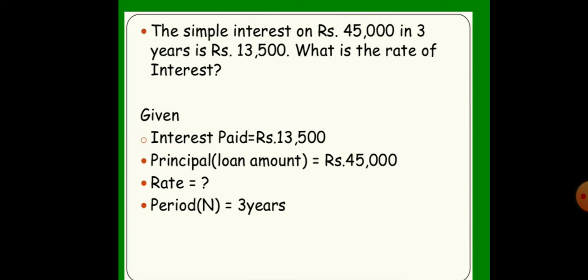Based on the example: The simple interest on Rs. 45,000 in 3 years is Rs. 13,500. What is the rate of interest? Based on the question, you have to calculate the rate of interest. Given: Interest paid = Rs. 13,500, Principal = Rs. 45,000, Period = 3 years. Then you find the rate.